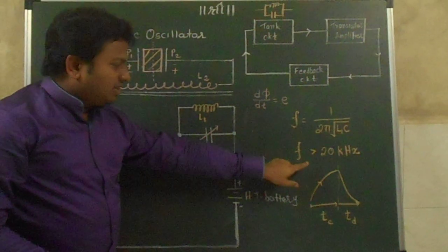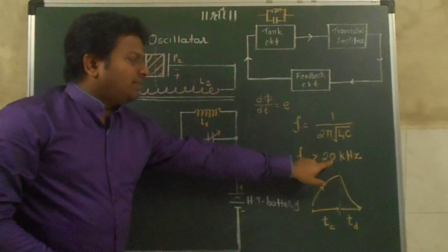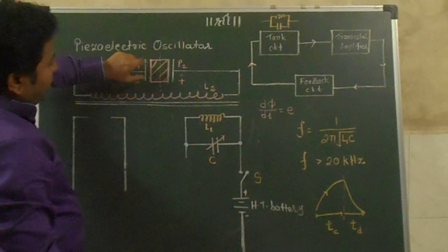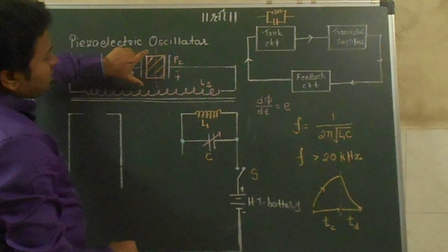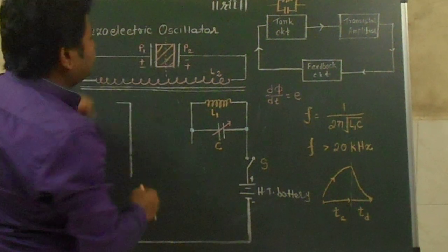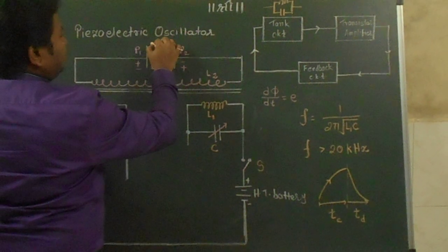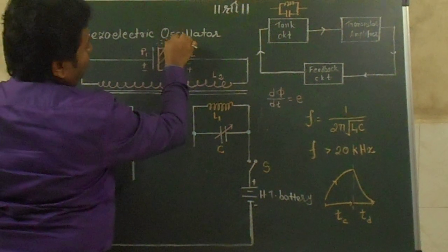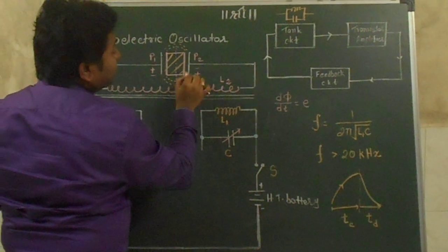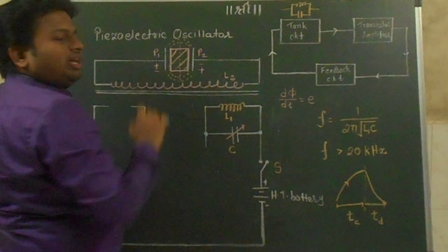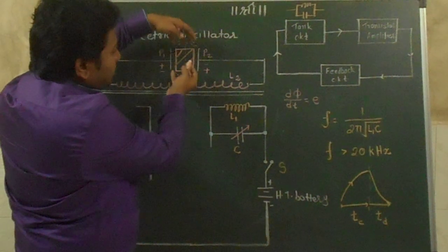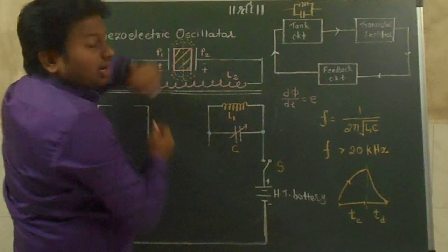Since the frequency of the tank circuit is set to about 20 kHz, the frequency of vibration of the quartz crystal will also be about 20 kHz. As a result, the surrounding air molecules will also start vibrating with the same frequency of about 20 kHz. So we can say that ultrasonic waves are generated in the surrounding region.